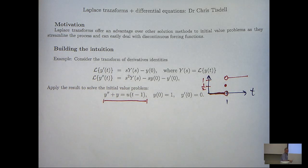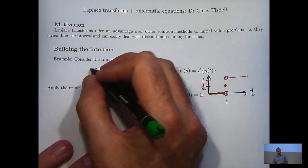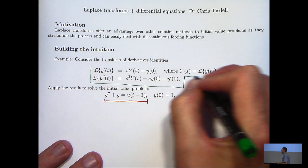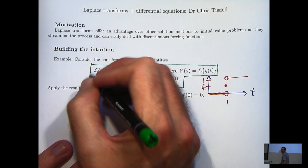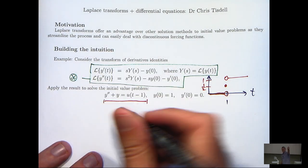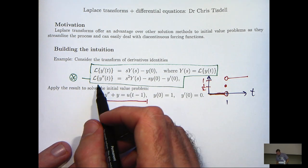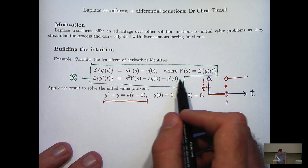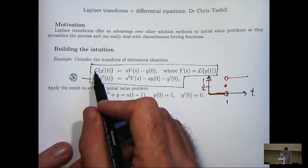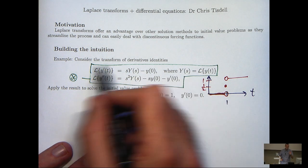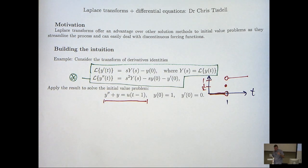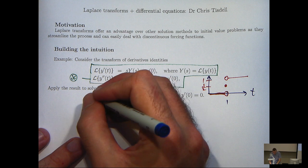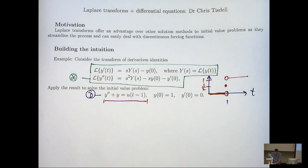An important identity that we're going to use in this example is this starred identity here, the transform of derivatives identity. If there was a y' down here as well, we would use the first one also. Let me just refer to this differential equation as d, and let me show you how to solve this problem.